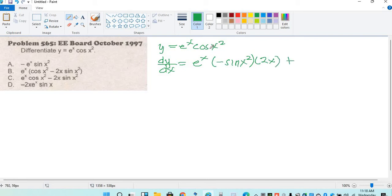So, plus, copy mo naman yung eto, cos x squared. Then, derivative naman itong e raised to x. So, copy mo muna e raised to x. Yan yung derivative. Then, derivative ng exponent is 1.